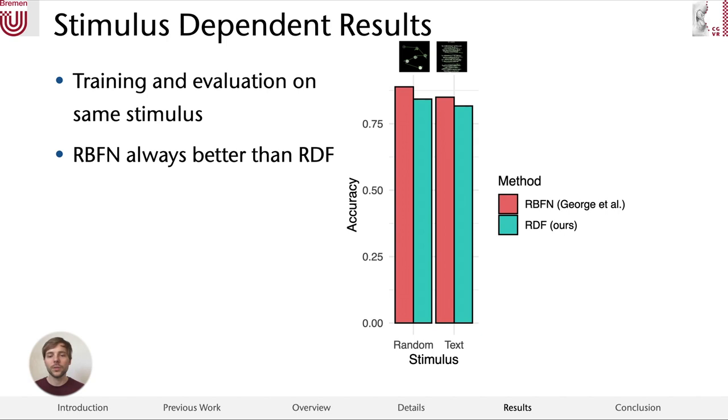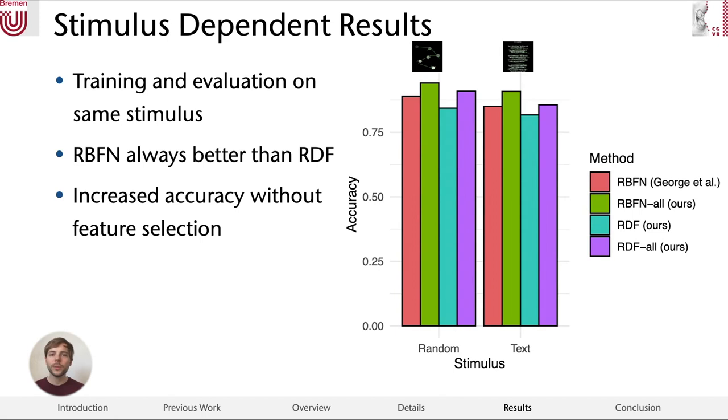When we use all features and omit the feature selection step, we found that for all configurations, the accuracy increases. This shows that at least in these settings, both radial basis function networks and random decision forests work better when no feature selection step was performed.